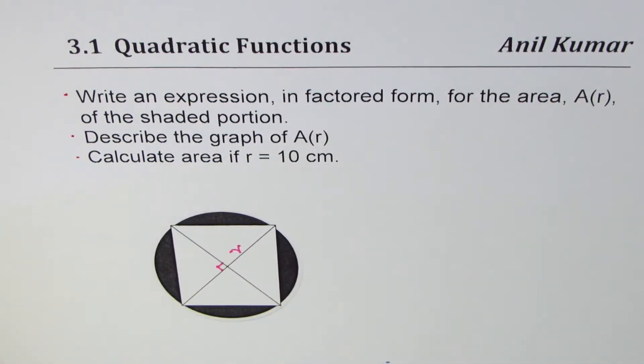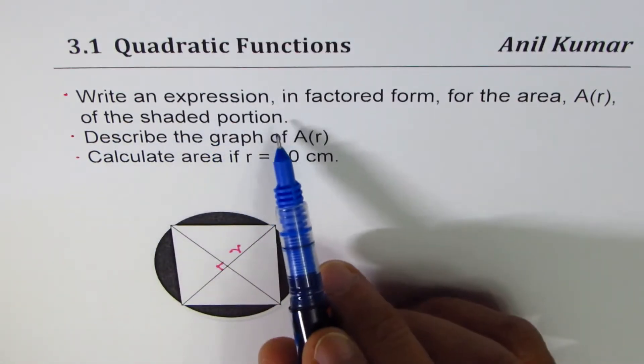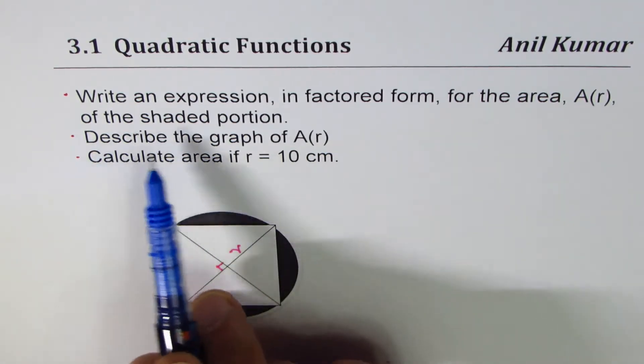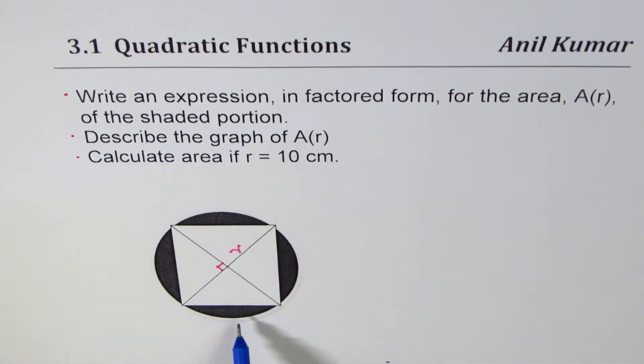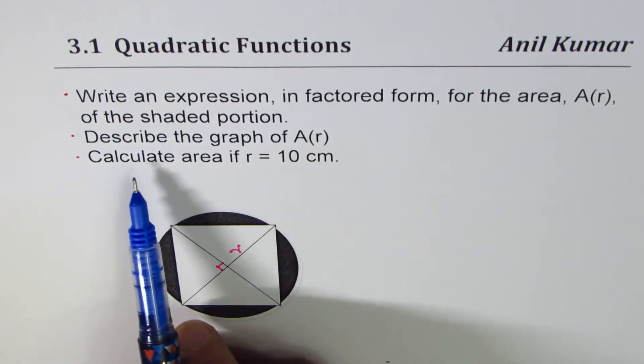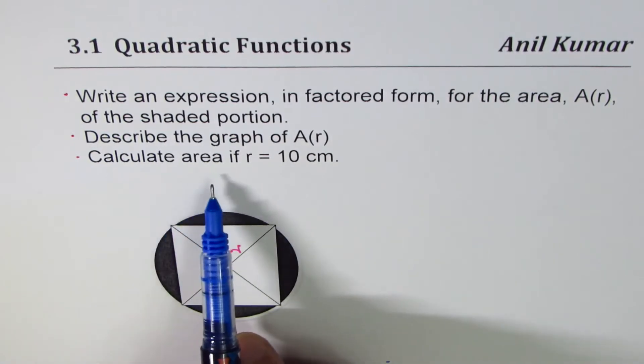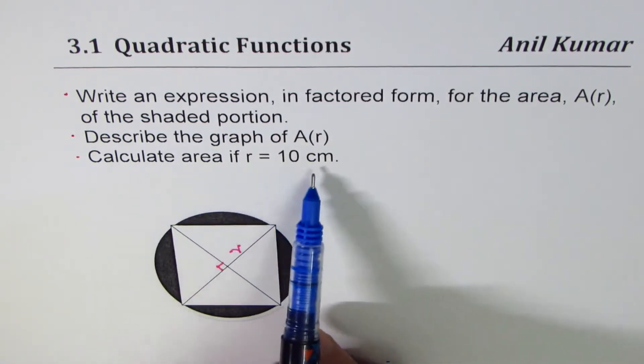I'm Anil Kumar sharing with you questions posted by my subscribers. The question here is: write an expression in factored form for the area A(r) of the shaded portion, describe the graph of A(r), and calculate area if r equals 10 centimeters.